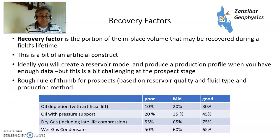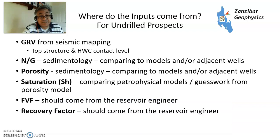For undrilled prospects, inputs come from several sources. Gross rock volume comes from seismic mapping — you have your top structure and estimated hydrocarbon-water contact levels, though the contact is somewhat a guess while the top structure is more reliable. For sand body thickness, when using an area-depth method rather than a direct method (i.e. when you can't seismically image the base), the geologist provides this from regional modelling. The geologist will also provide net-to-gross from sedimentological analysis, and you can compare with adjacent wells. Similarly for porosity — depth of burial, sedimentary facies, etc.